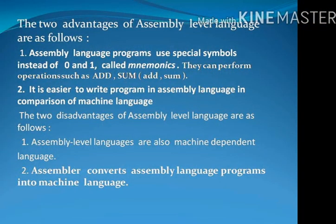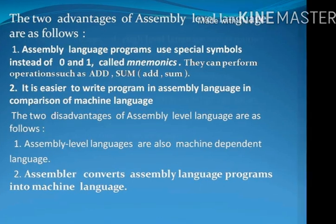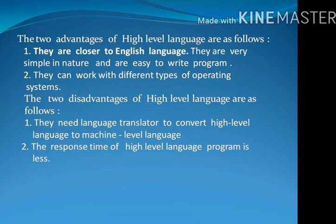The two advantages of assembly-level language are as follows. Number 1: Assembly language programs use special symbols instead of 0 and 1, called mnemonics. They can perform operations such as add, subtract, etc. Number 2: It is easier to write programs in assembly language in comparison to machine language. The two disadvantages of assembly-level language are: Number 1: Assembly languages are also machine-dependent. Number 2: An assembler converts assembly-level language programs into machine language.